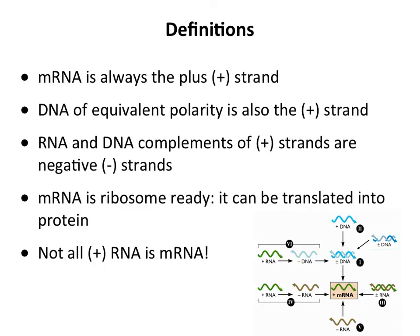But one thing I want to tell you is that not all plus RNA, especially in the virus world, is mRNA. There are some viruses that have plus-stranded RNA genomes, but it's not mRNA — it's not translated. So just being plus-stranded is not enough to get you translated; there are other requirements as well. So when we look at the Baltimore scheme, these pluses and minuses refer to the polarity of the nucleic acid with respect to mRNA.